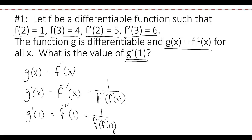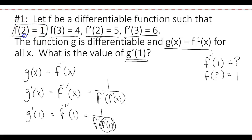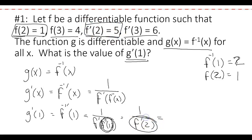We need to figure out what f⁻¹(1) is. If f⁻¹(1) equals some unknown value, then f of that value equals 1. Looking at the given information, f(2) = 1, so that unknown must be 2. That means f⁻¹(1) = 2, so we have 1 over f'(2). And f'(2) is given as 5, so the final answer is 1/5.